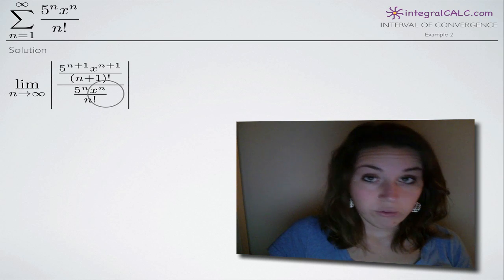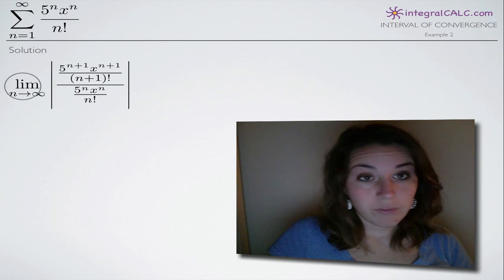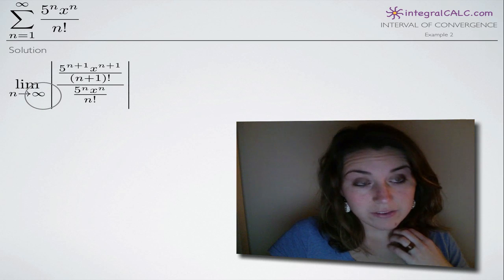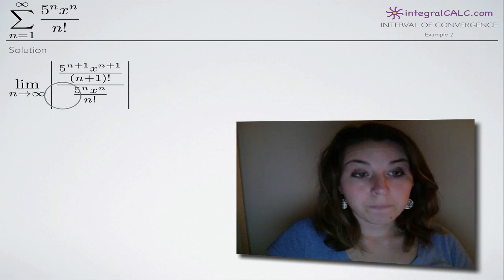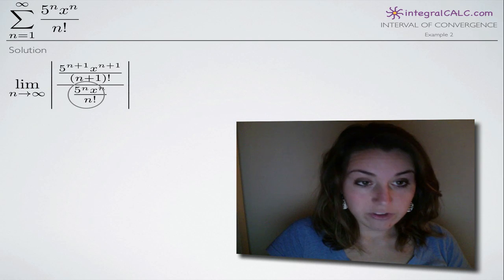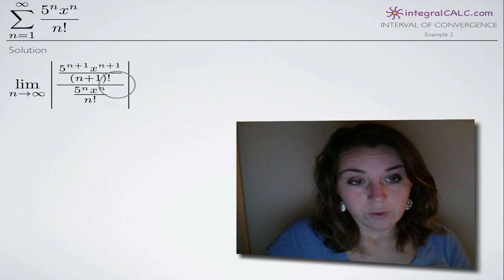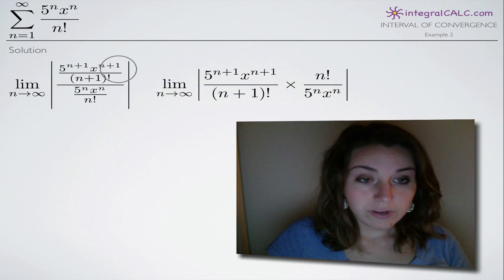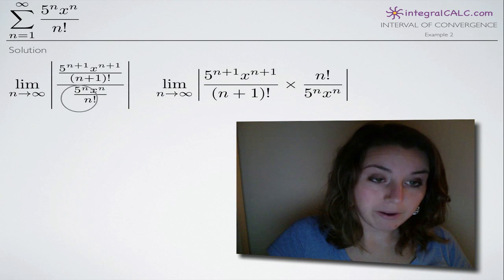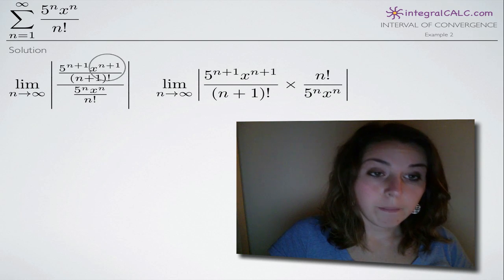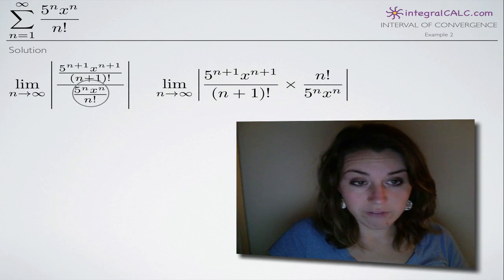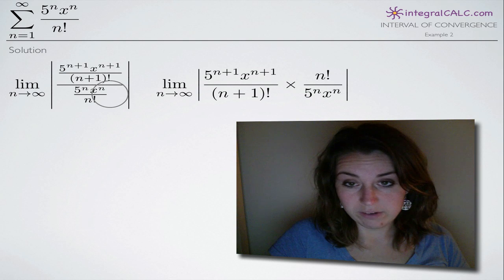Once we've set it up — and by the way, we're taking the limit as n approaches infinity always — now it's just a matter of simplifying what's inside these absolute value brackets. The way we're going to do that first is, instead of dividing by this entire fraction, we're going to multiply the top fraction by the inverse of the bottom fraction.